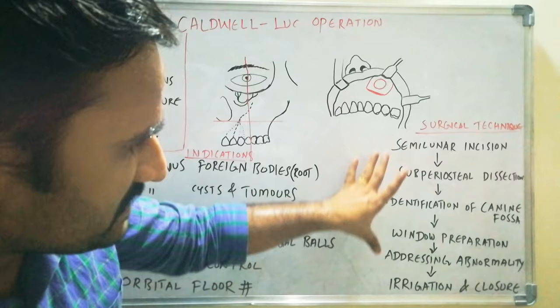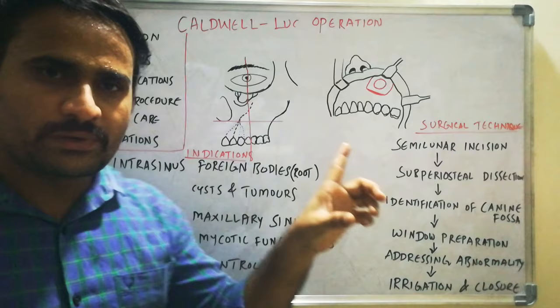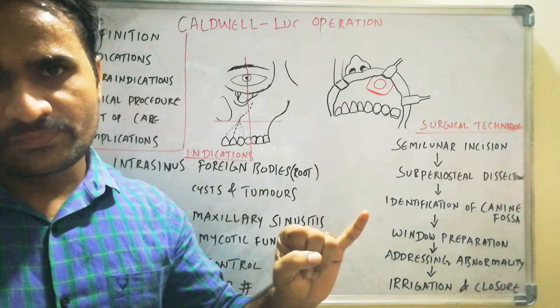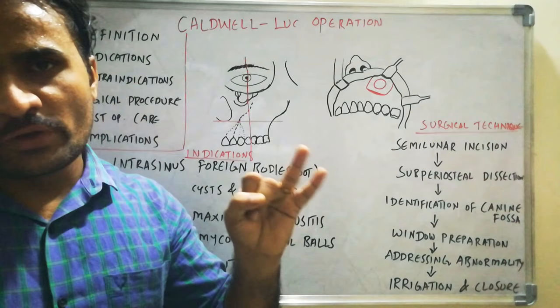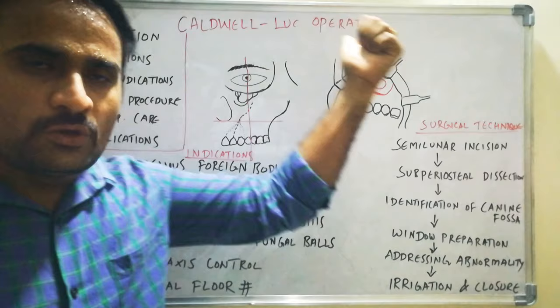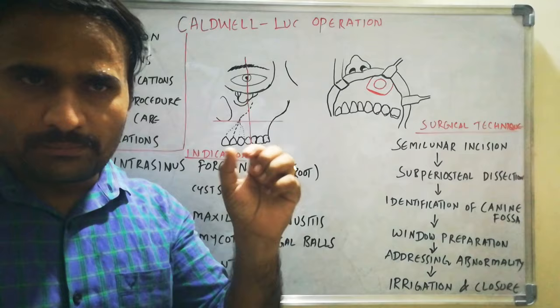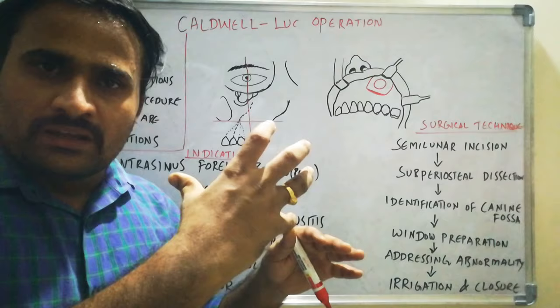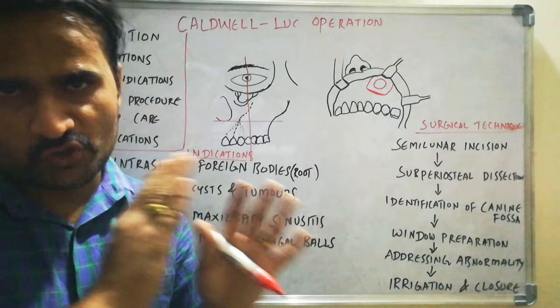Coming to post-operative care: post-operatively you should advise the patient not to blow the nose or sneeze for at least four to five days. You prescribe antibiotics, analgesics, and decongestants. For allowing drainage, in some cases you may combine the Caldwell-Luc operation with intranasal antrostomy — making a small bony window in the inferior meatus so that by gravity, any fluid collection or drainage comes out.